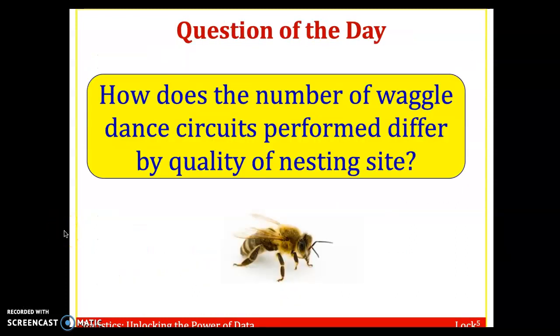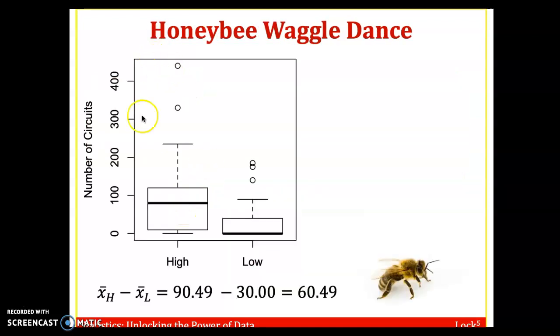So how does the number of waggle dance circuits performed differ by the quality of the nesting sites? The scientists set up one very good site and one adequate but not as good. Here's a quick visual summary of the data looking at box plots. On your left, you've got the high quality nesting site. We're looking at the number of circuits. Notice on the high, the median number of circuits is about 85 to 90 circuits.